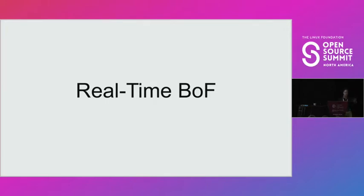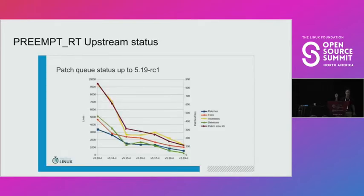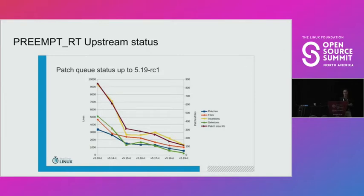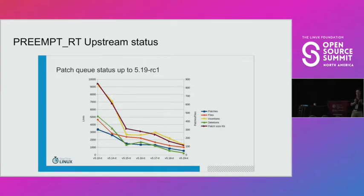Let's move forward and see the direction of where real-time is right now. I copied this slide, and it shows the patch queue status up to 5.19 RC1. We're at RC3 now, I believe. You can see we've actually shrunk the patch set quite a bit. What that means is the stuff is going into mainline. John Corbett and LWN used to always predict that 'this year, the real-time patch will be there' — he's been doing that for the last 10 years.